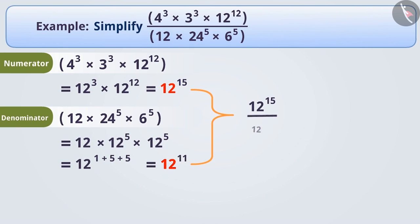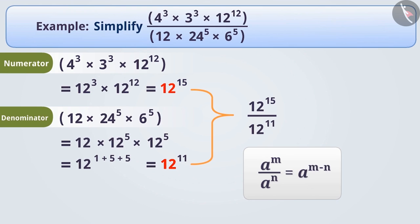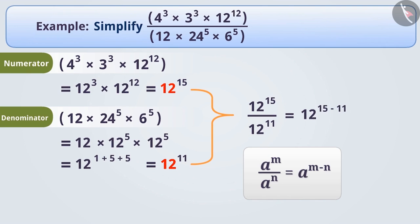Now we will solve 12 to the power of 15 divided by 12 to the power of 11. We use the law: a to the power of m divided by a to the power of n equals a to the power of m minus n. So 12 to the power of 15 divided by 12 to the power of 11 equals 12 to the power of 15 minus 11, which equals 12 to the power of 4.